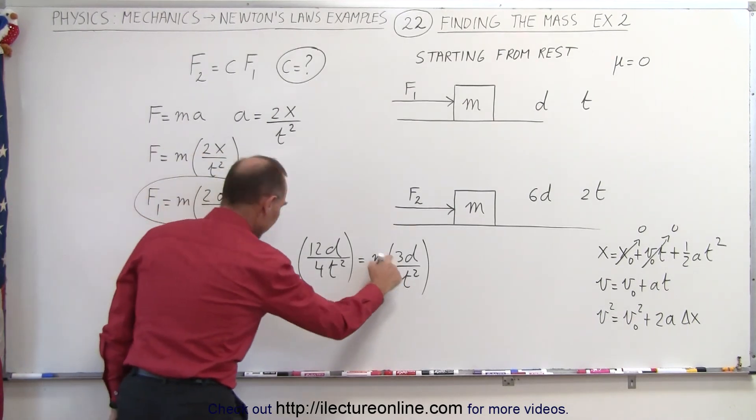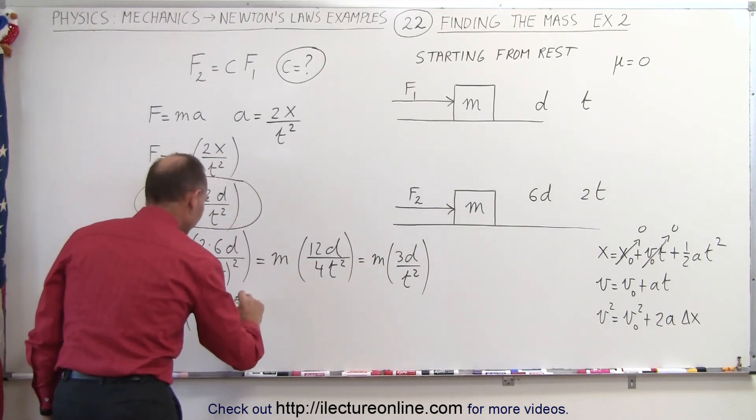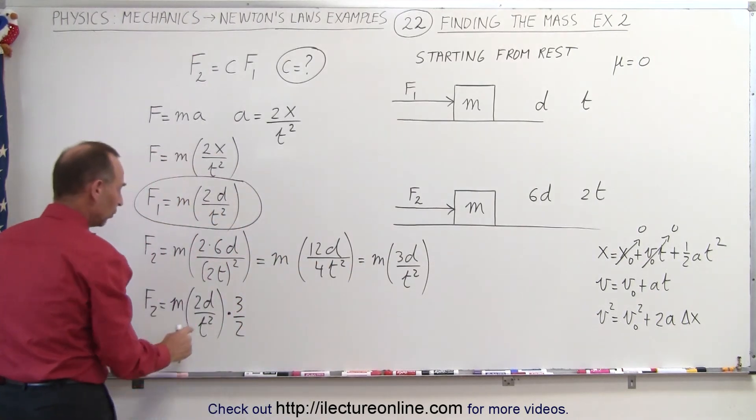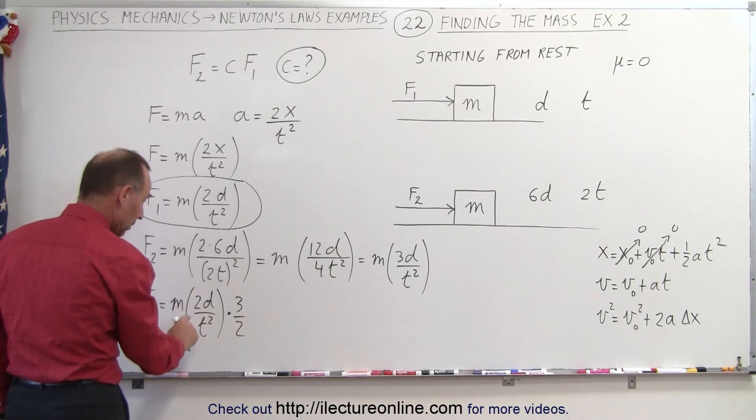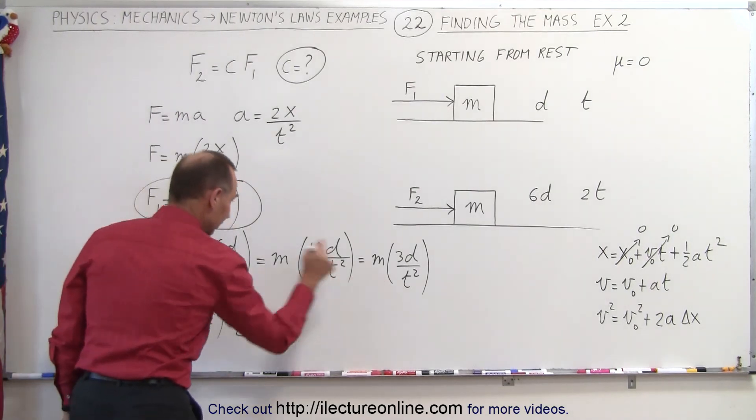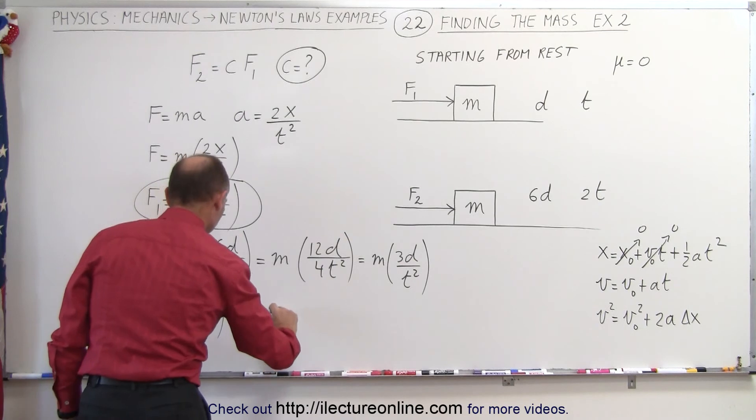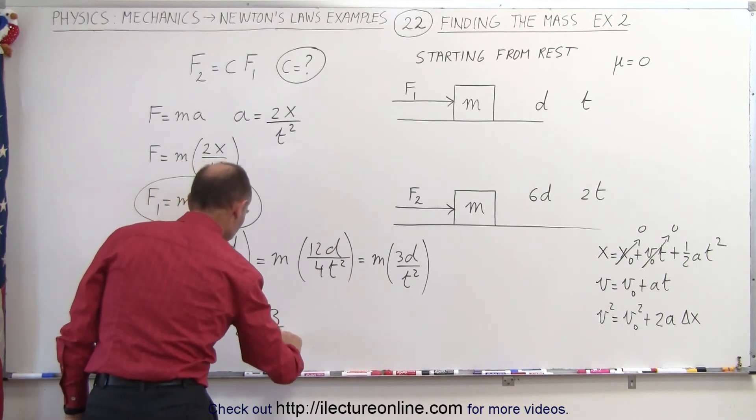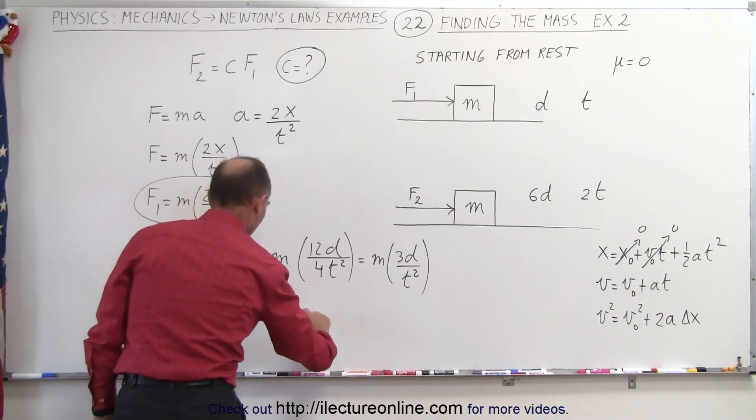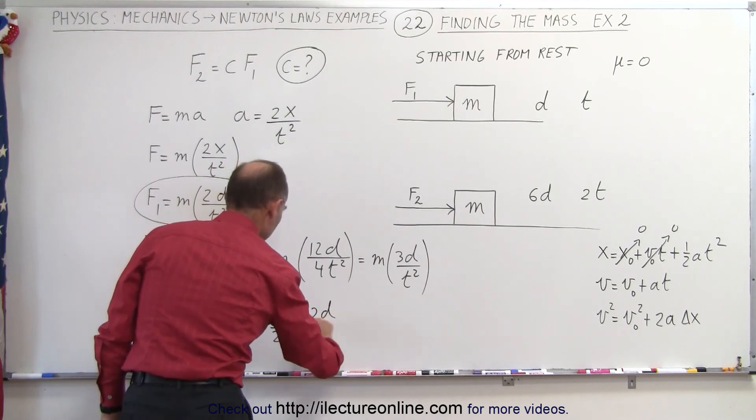So that means we can write f2 as equal to m times 2d over t squared, but remember we had a 3 instead of 2, so we multiply this times 3 over 2. So when we have 3 over 2 times 2, that gives us 3, which is the same as what we have over here. And then we can write this as 3 over 2 times m times 2d over t squared.